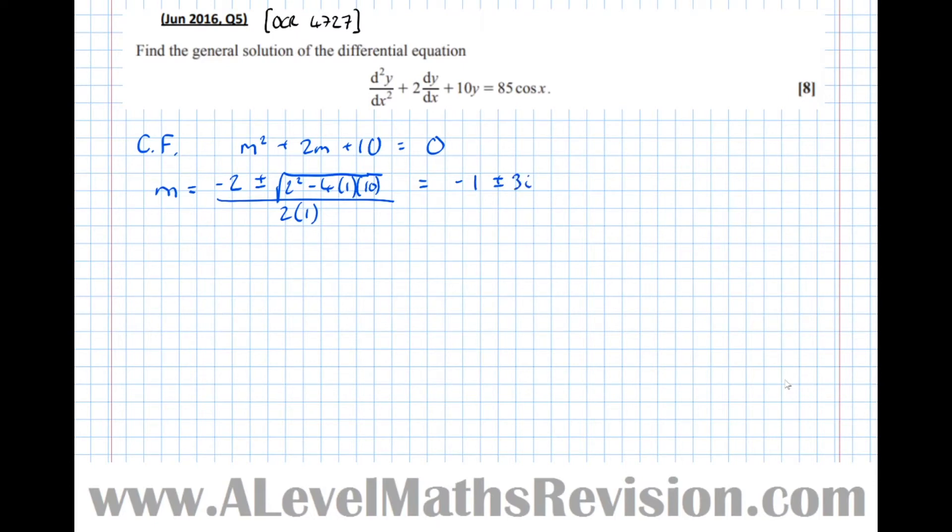Now when the complex roots, this is our alpha, and this number here is our beta. So the general form of the solution when the roots are complex,